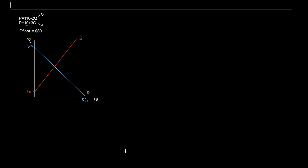The first thing we need to calculate is our equilibrium price and quantity. To do that, we recognize that at the intersection of supply and demand, we have some quantity and price that are the same on both lines. So in order to find that, we just set the two equations equal to each other — price equals price, or price from demand equals price from the supply curve.